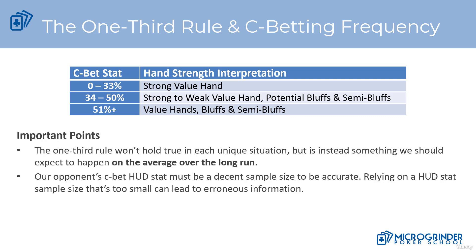One thing I do want to point out is that this one-third rule is not going to hold true in every unique scenario. We know that there are tens of thousands of different flop, turn, and river runouts, and there's no way for us to know how each particular hand is going to hit each particular flop. Looking back at our last lecture, we know that certain ranges aren't going to hit a strong value hand one-third of the time.